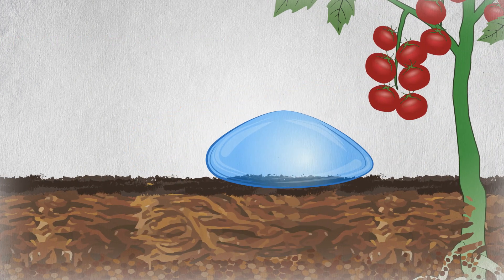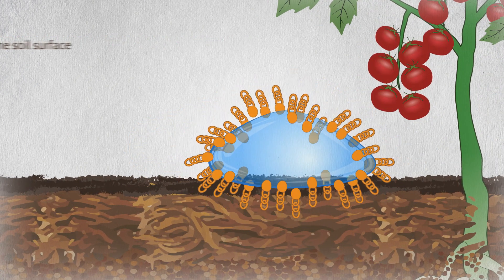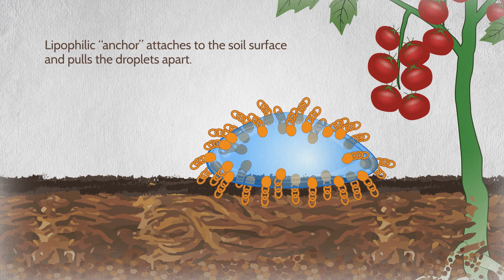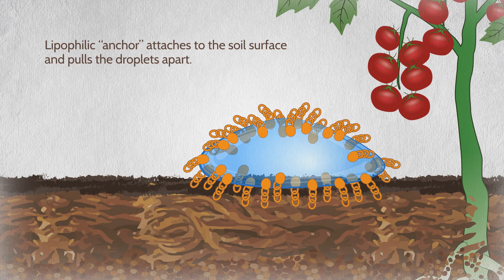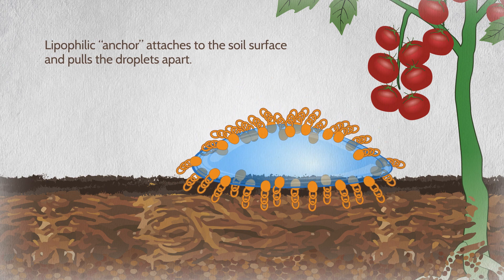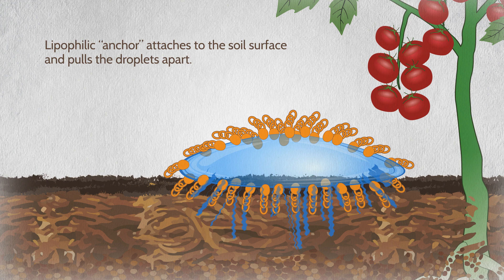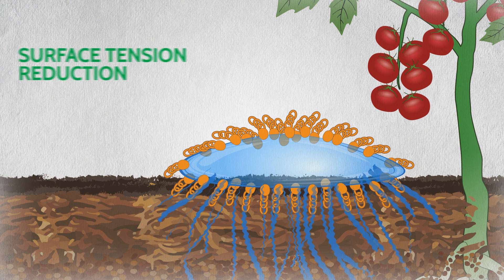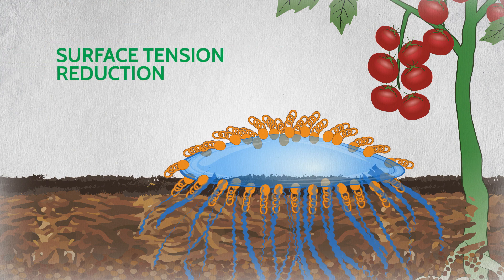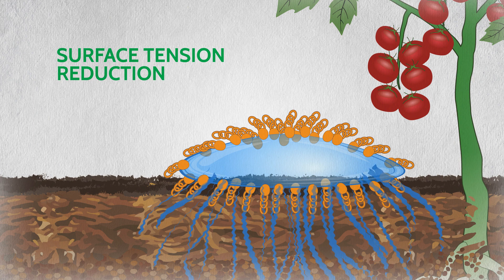When water treated with an infiltration surfactant is applied to the soil, the lipophilic anchor attaches to the soil surface and pulls the droplets apart. This is called surface tension reduction. Surface tension reduction causes water to infiltrate cracks and crevices in the soil and to move throughout the plant root zone.